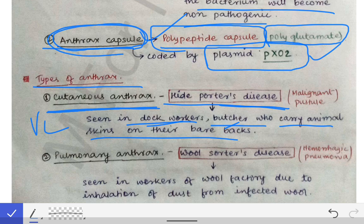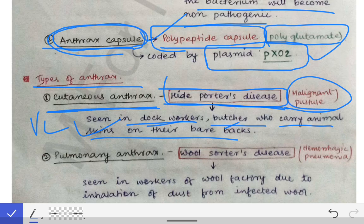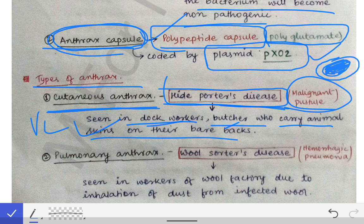Cutaneous anthrax is characterized by malignant pustule, which is a manifestation where a black coal-colored scar is formed, with a reddish edema around the scar. It is called malignant pustule not because it is a malignant condition, but due to its appearance.